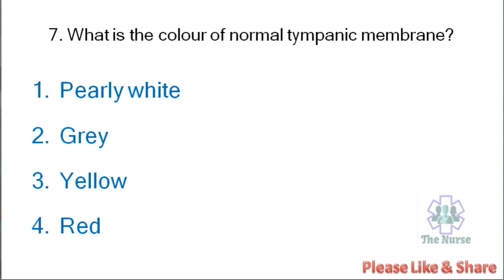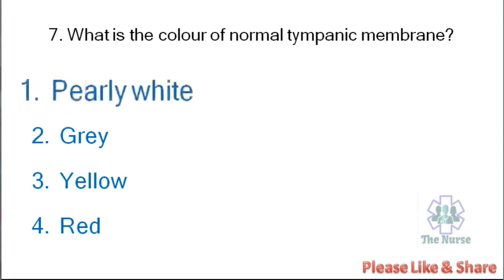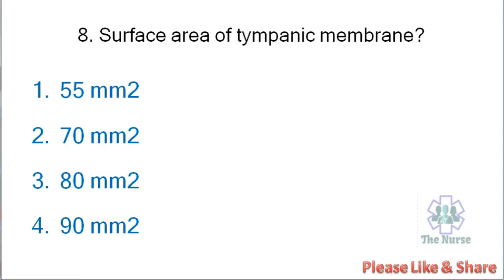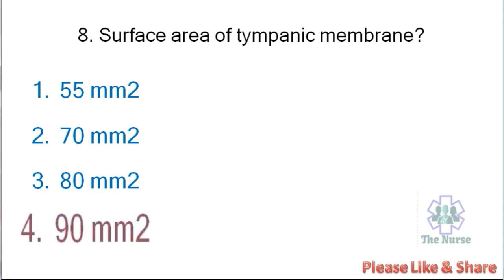Next question: What is the color of normal tympanic membrane? Options: purely white, grey, yellow, red. Correct answer is purely white. Next question: Surface area of the tympanic membrane — 55mm², 70mm², 80mm², or 90mm²? Correct answer is 90mm², but the answer is a little confusing so you need to check it.